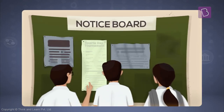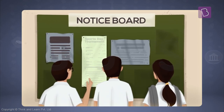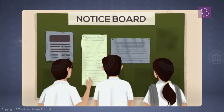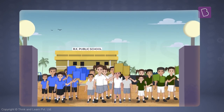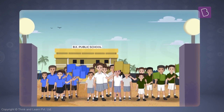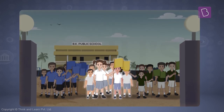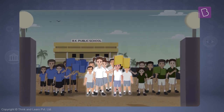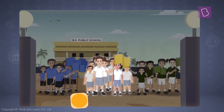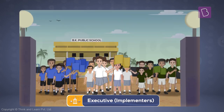Let's understand this with an example. Let's say there's a sports tournament in your school, and students from several other schools are also going to take part. But it is your school that is conducting the tournament — this means that your school acts as the executive here, the implementers.